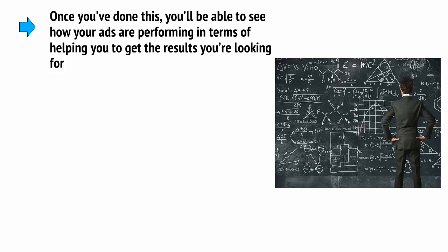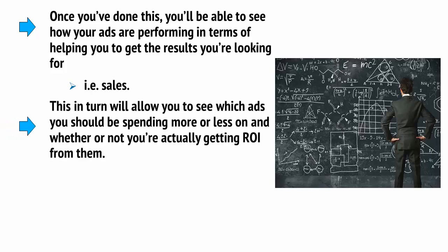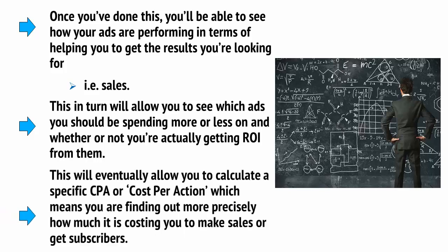Once you've done this, you'll be able to see how your ads are performing in terms of helping you get the results you're looking for — i.e., sales. This will allow you to see which ads you should be spending more or less on, and whether or not you're actually getting ROI from them. This will eventually allow you to calculate a specific CPA, or cost per action, which means you're finding out more precisely how much it's costing you to make sales or get subscribers.